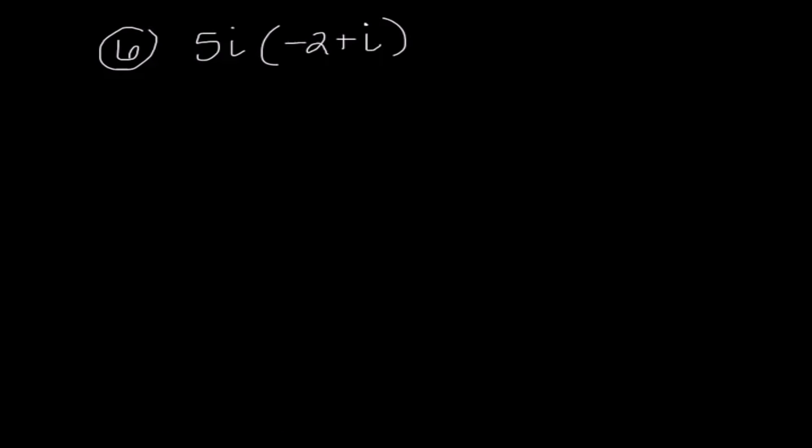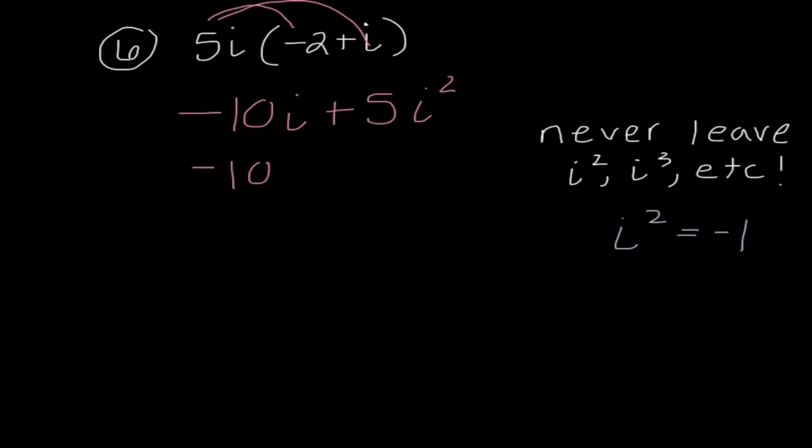Back to some evaluating and simplifying. I'm just going to distribute that 5i so I get negative 10i plus 5i squared. And I have a problem here. We said we should never leave i squared, i cubed, etc. in our problem. So I need to think back to i squared. We said i squared is equal to negative 1. So what I'm going to do is substitute in negative 1 instead of i squared. When I multiply these two together, I get negative 5. I'm going to write that first because I know my real part needs to come first. My imaginary part comes second. So our answer here is negative 5 minus 10i.